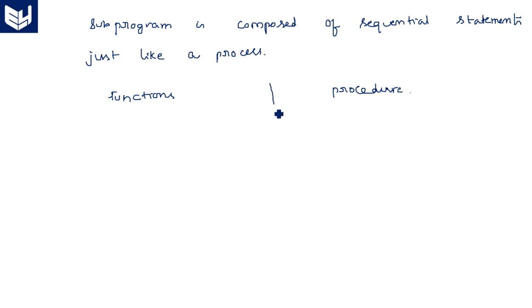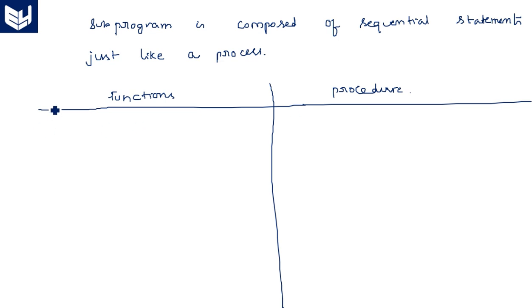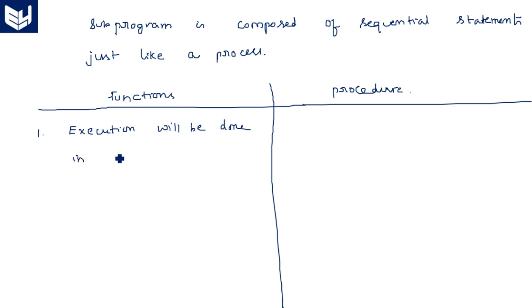First difference: a function executes in zero simulation time, meaning the time taken for execution of functions is very less. A procedure, however, may or may not execute in zero simulation time.